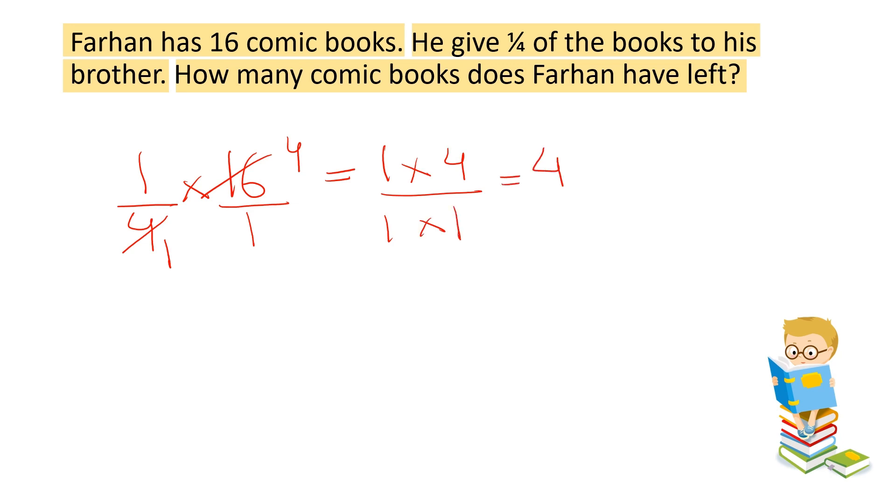Answer is 4. In denominator, if we don't write 1, it is not going to make any difference. So, he gave 4 books to his brother. Now that we know how many books he has given to his brother, we can find out how many books Farhan have now. So, 16, he had 16 books. He gave 4 books to his brother. So, now he has 12 books left.